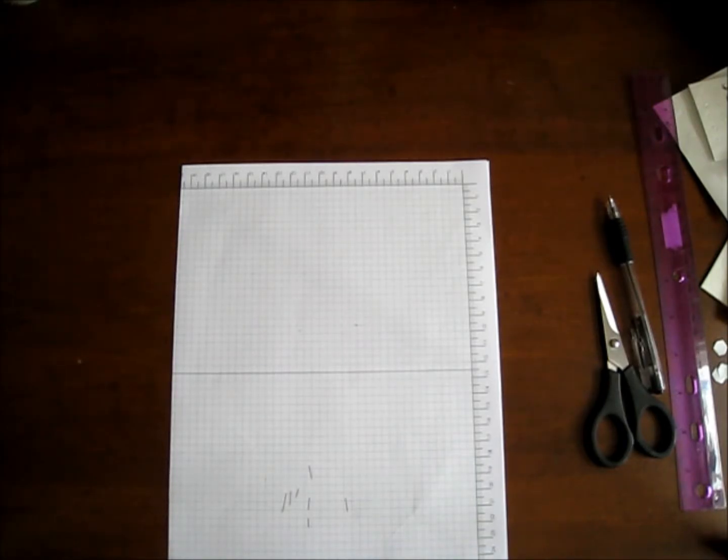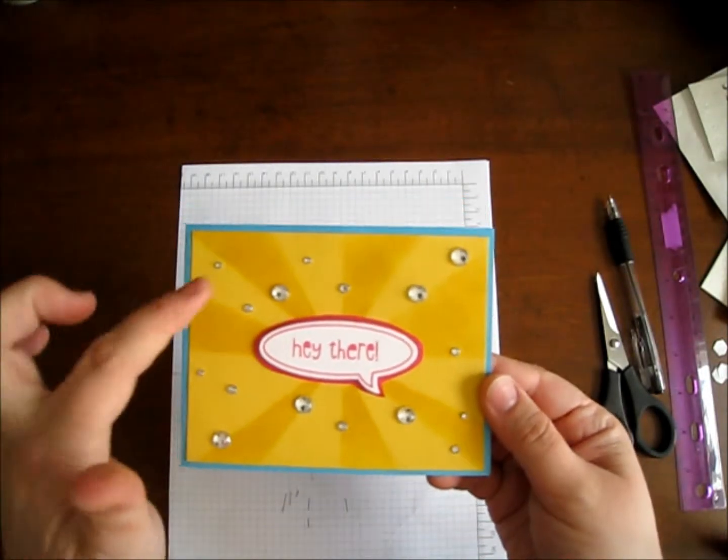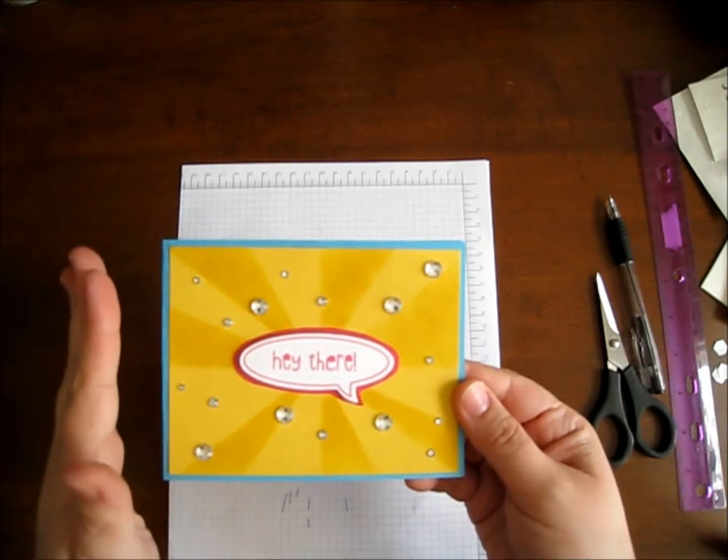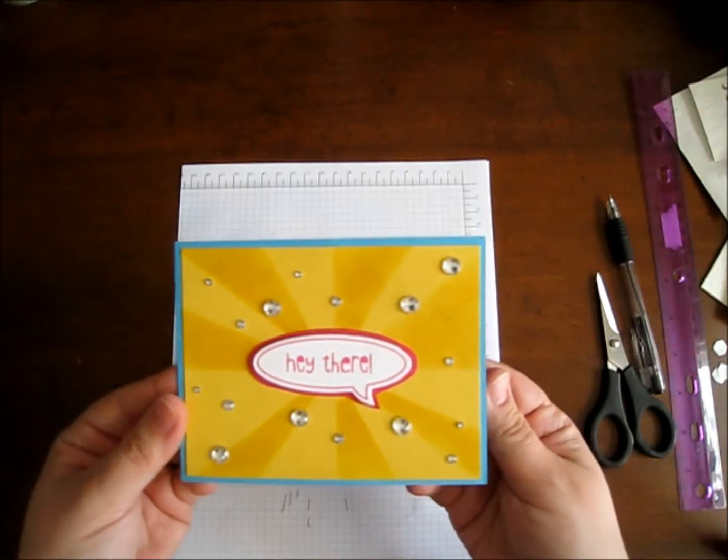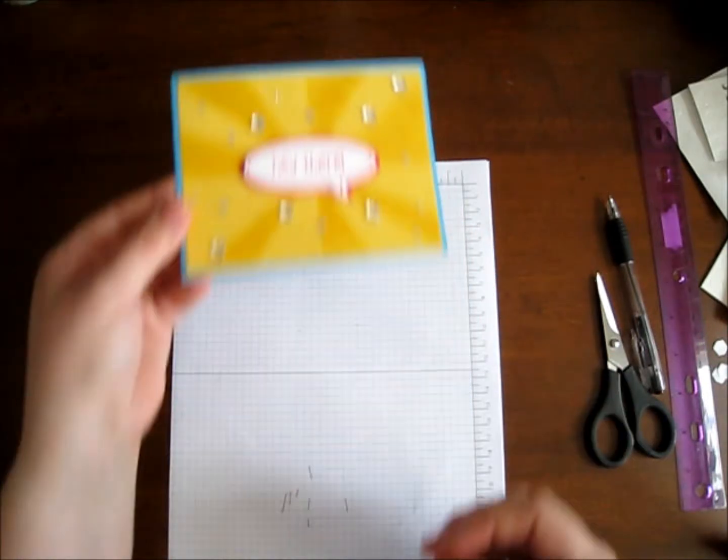So this is one that I'm doing using a template. Here's the card and the technique that we're going to do is the starburst in the background here. Pretty basic card overall, it's just the technique I think that makes it really pop and those lovely rhinestones. But anyway, let's get to the card.